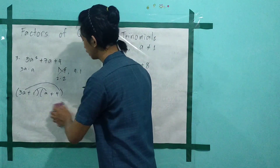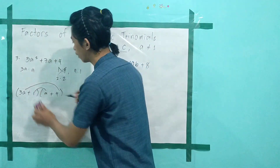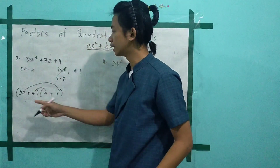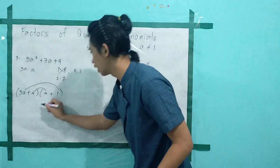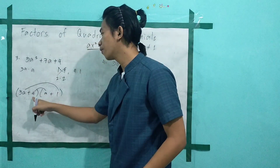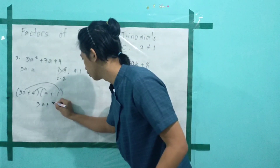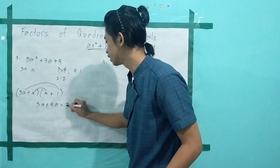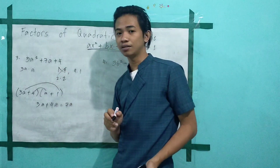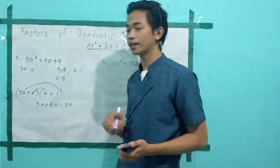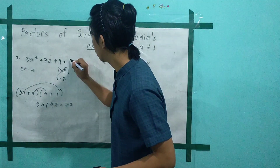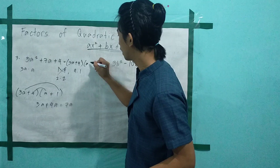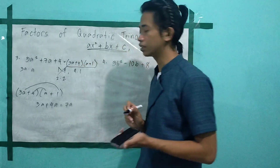Next, try (3a + 4)(a + 1). So 3a multiplied by 1 gives 3a, and 4 multiplied by a gives 4a. Their sum is 3a plus 4a, which equals 7a. Same as our middle term? Yes. Therefore, the factors are (3a + 4)(a + 1).